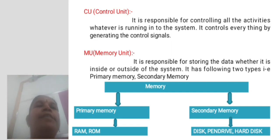MU - Memory Unit. It is responsible for storing data whether it is inside or outside of the system. It has two types: Primary Memory and Secondary Memory.